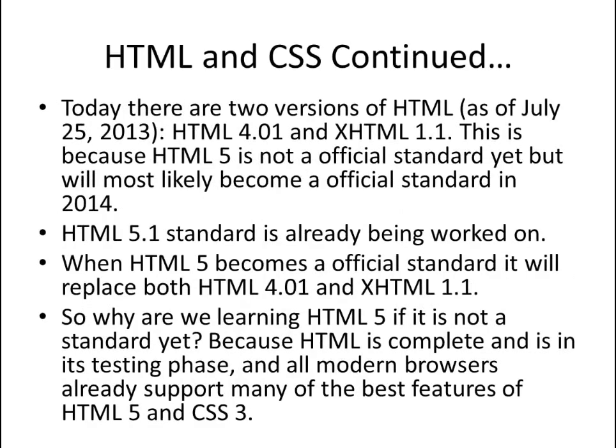As of today, July 25th, 2013, there are two official versions of HTML: HTML 4.01 and XHTML 1.1. HTML5 is not an official standard yet, but will most likely become one in 2014. HTML 5.1 is already being worked on. When HTML5 becomes an official standard, it will replace both HTML 4.01 and XHTML 1.1. So why are we learning HTML5? Because HTML5 is complete and is in the testing phase, and all modern browsers already support most of its basic features, as well as CSS3.